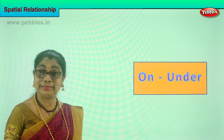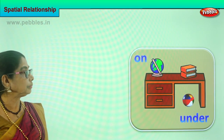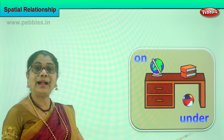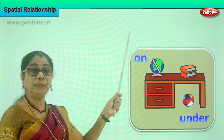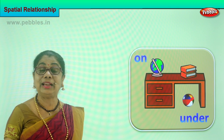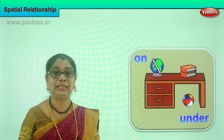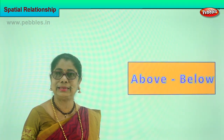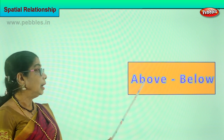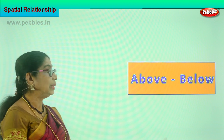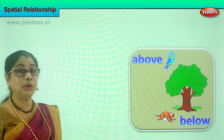Next: on, under. What's the next one? On, under. Let's look at the picture. Where is the globe? It's on the table — on. Where is the ball? Under the table. On the table, under the table — on, under. The ball is under the table. The globe is placed on the table. On, under the table.